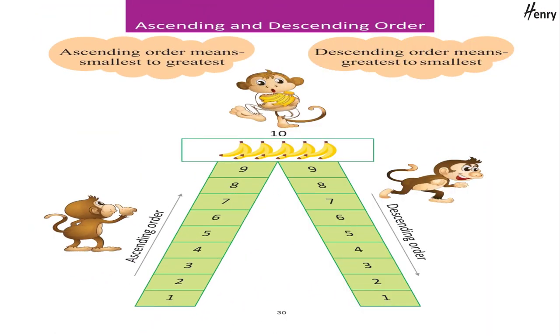Ascending and Descending Order: Ascending order means smallest to greatest. Descending order means greatest to smallest.